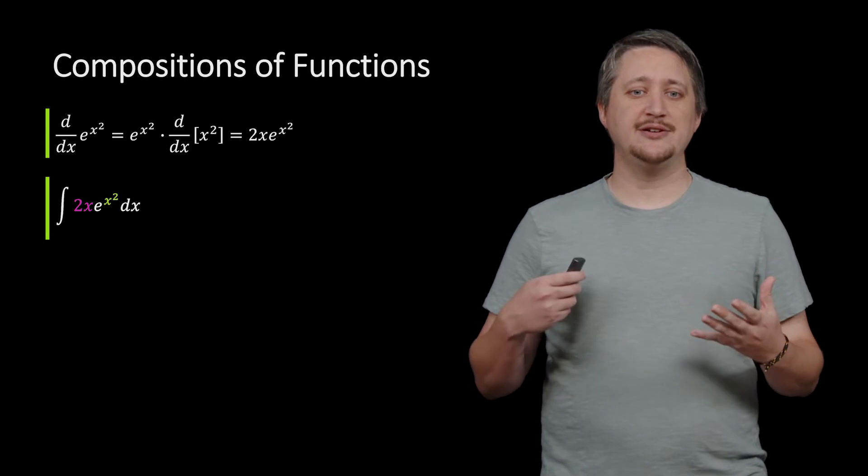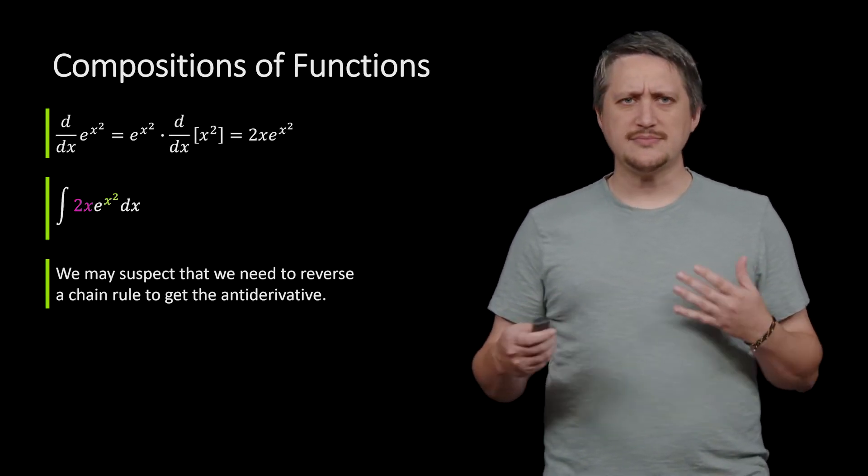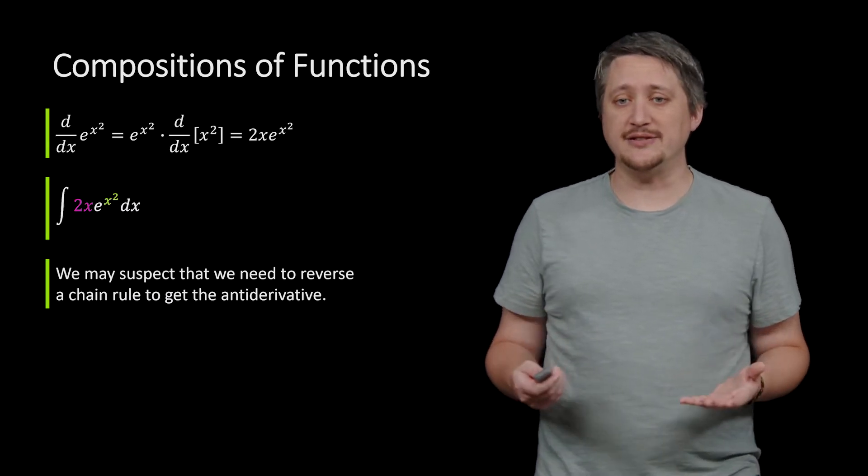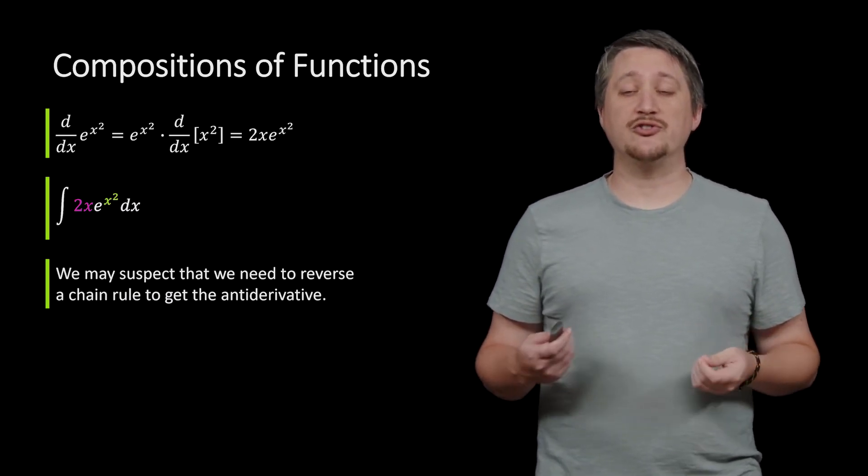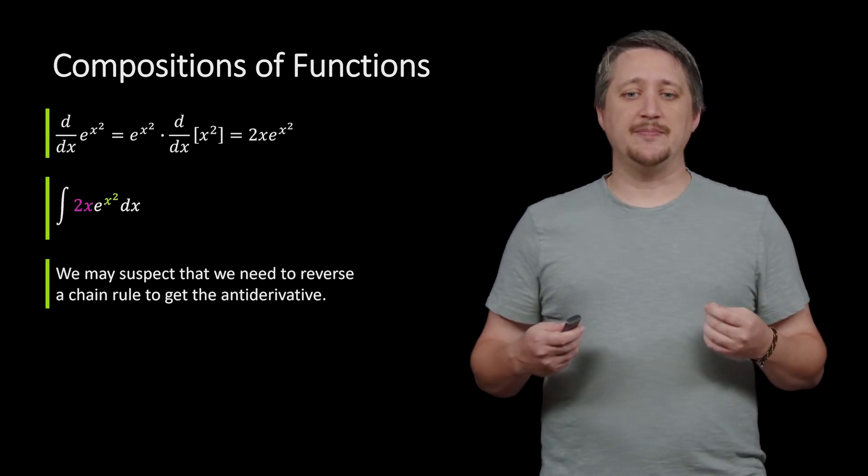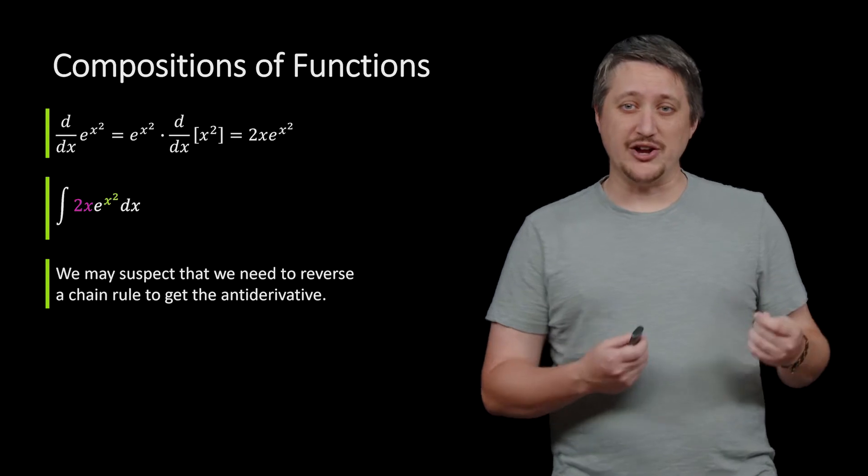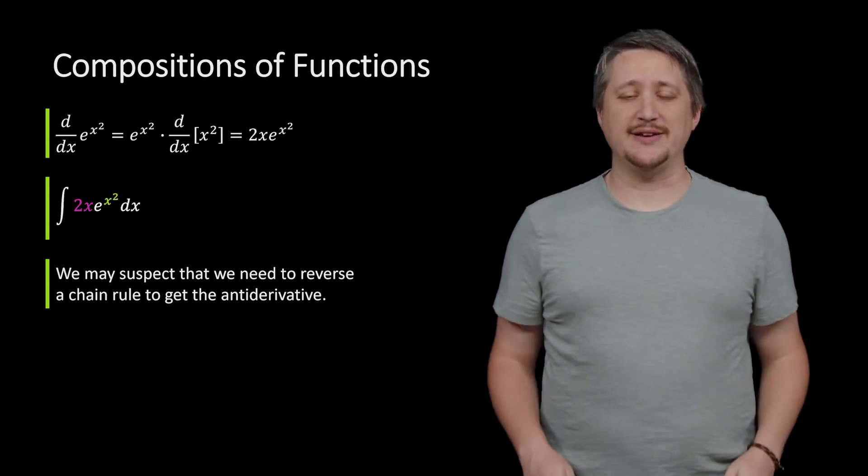And so the fact that the derivative of x squared is 2x might cause us to suspect at least that we're trying to reverse a chain rule. That part of this antiderivative is going to be needing to reverse the chain rule because that thing was generated by the chain rule. That's the idea.